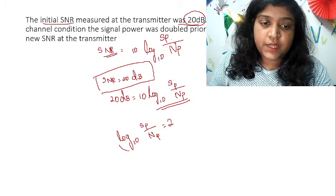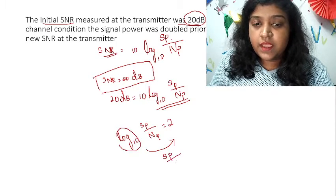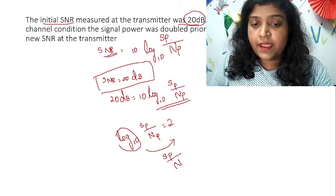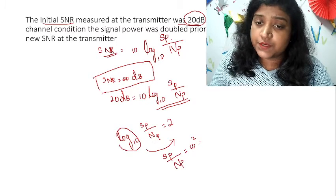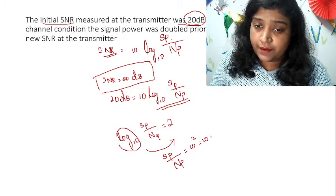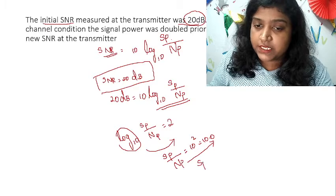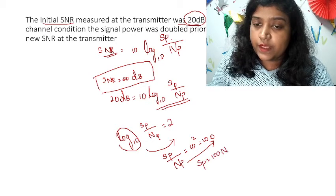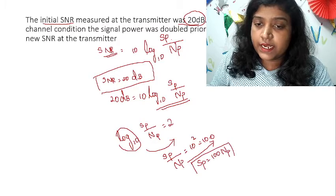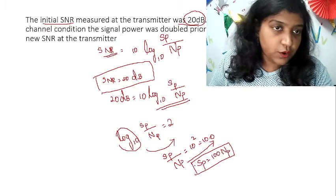If we transfer the log base 10 to the other side, what happens is SP divided by NP is equal to 10 power 2, which is nothing but 100. So SP is equal to 100 times NP, clear?